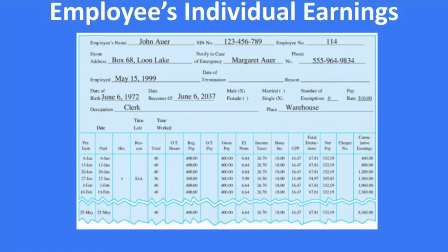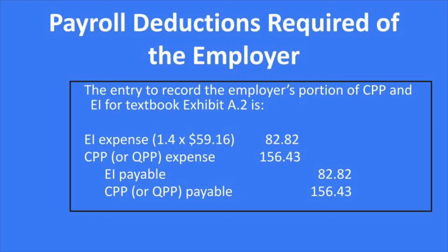We also need to record a journal entry to reflect the employer's contributions to the deductions. As mentioned, employment insurance is paid at 1.4 times what the employee pays, and CPP is a matched contribution. So we record EI expense and CPP expense — for example, $82.82 and $156.43 — and in the credit we have EI payable of $82.82 and CPP payable of $156.43, reflecting payables that will be paid to the federal government at some point in time.